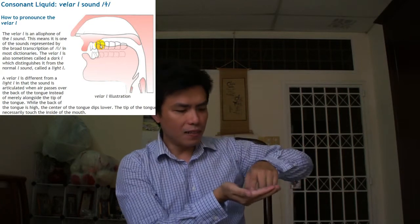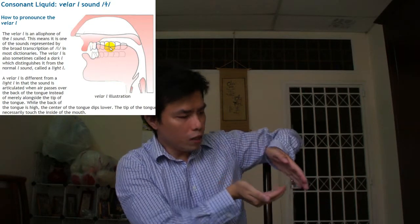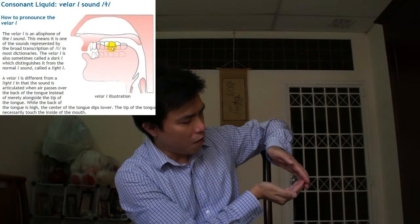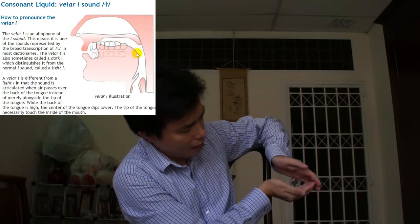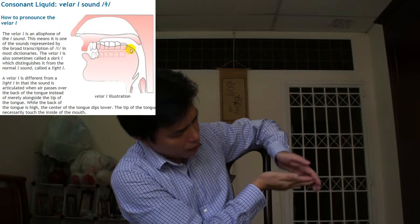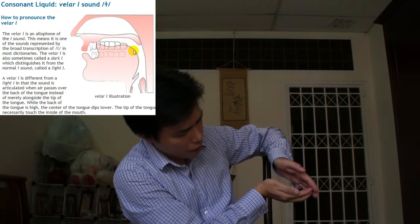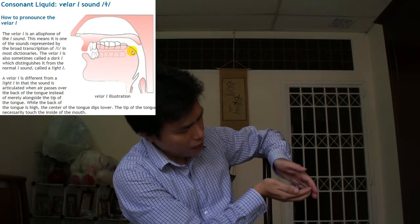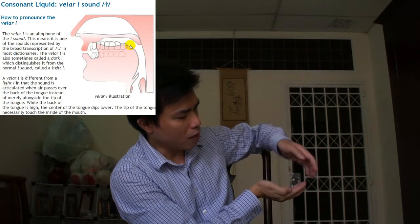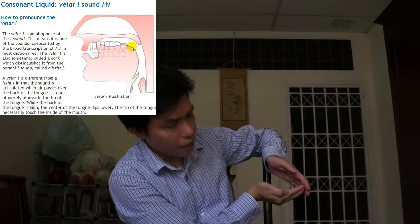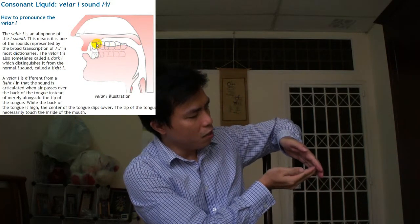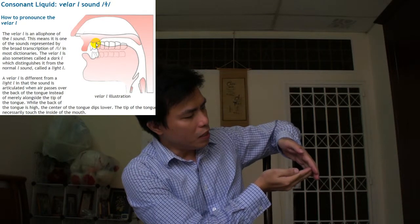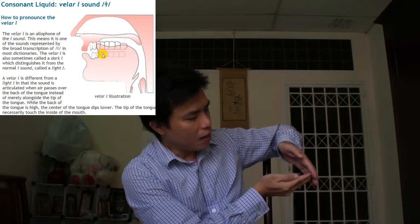Và cái phần đằng giữa lưỡi của bạn nó sẽ có phương hướng bị vỏng xuống, trong khi cái phần đằng sau lưỡi của bạn nó có phương hướng là đẩy lên. Tức là phần đằng sau lưỡi của bạn sẽ bị nâng lên trong khi cái phần giữa lưỡi sẽ có phương hướng bị vỏng xuống. Và khi bạn kết thúc nguyên âm thì cái đầu lưỡi của bạn vẫn đụng lằm lợi, giữ nguyên ở vị trí đó khoảng một vài phần trăm giây rồi mới phát âm âm L, chứ đừng có bật nó xuống quá nhanh.